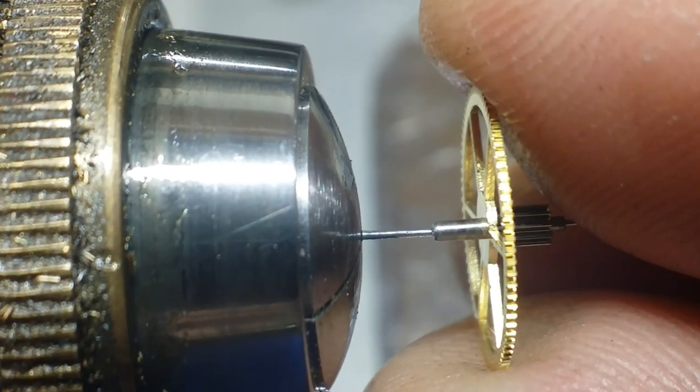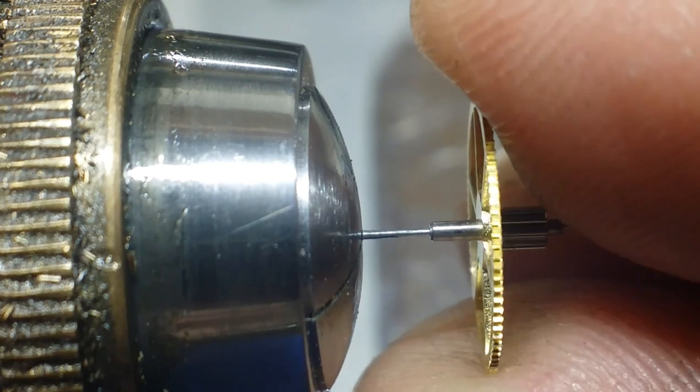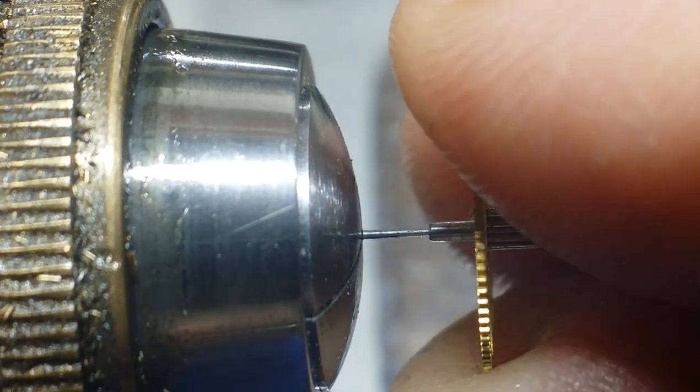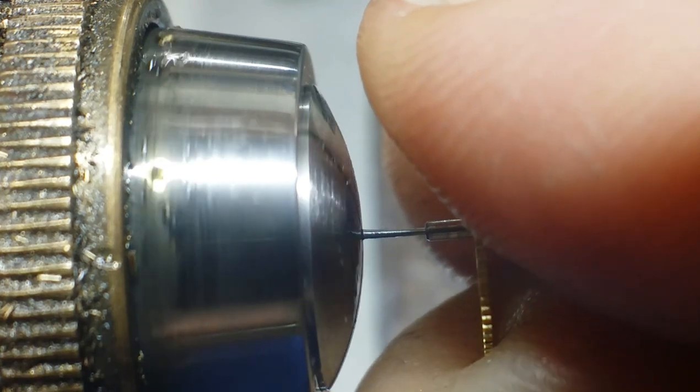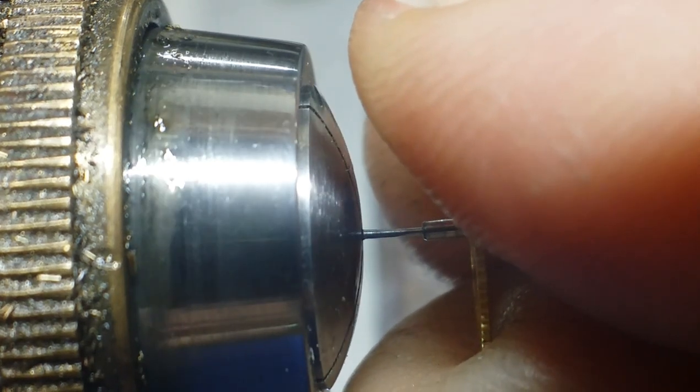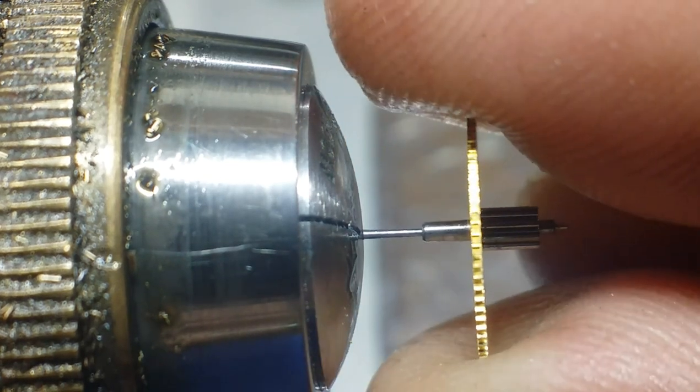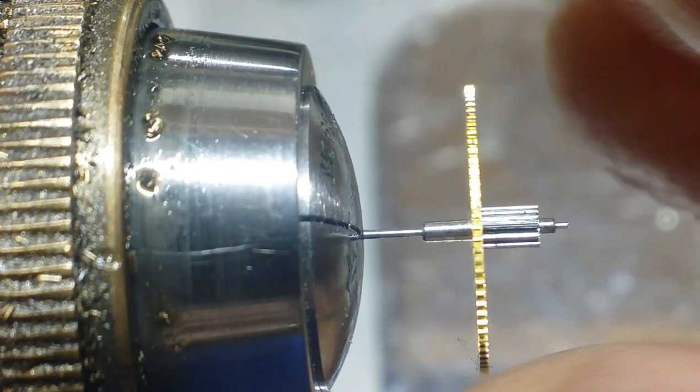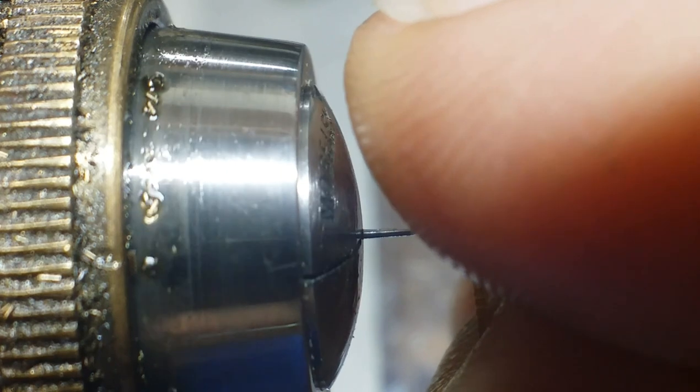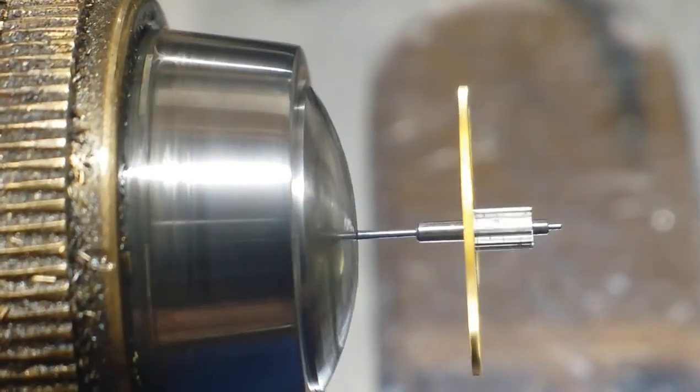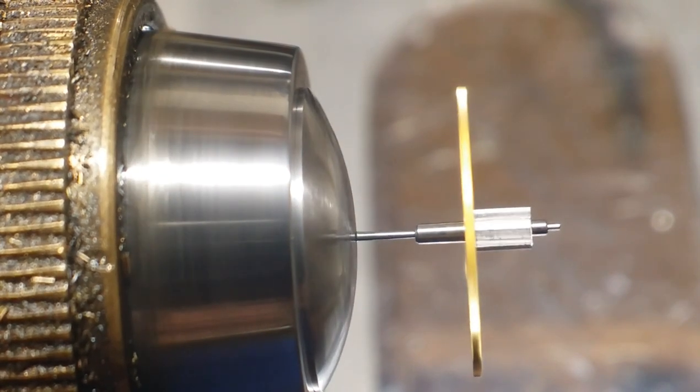Now when I'm satisfied with the fit, the way I fit it in is it's just friction fit. And I just twist it on slightly. And you could then test it to see if it's snug enough. And it should be a pretty tight twist. And that is enough to hold it in place.